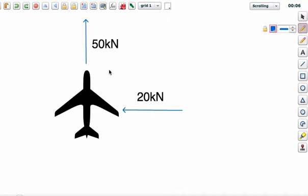So we have a plane, and the plane is moving forward with a force of 50 kilonewtons. And we could maybe have some wind on the plane, so the plane is being blown also to the left by a force of 20 kilonewtons.